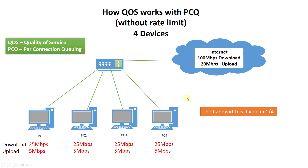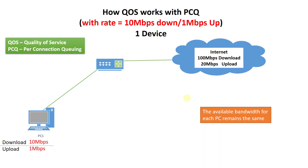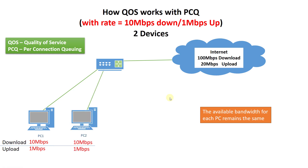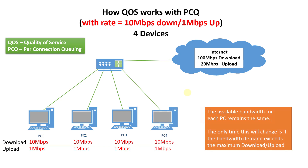Let us look at another scenario. In this scenario we have set a rate limit, and this rate limits the total download which for this scenario is just 10 megabits and also limits the total upload which is 1 megabit. With this limit, this PC will now only get 10 megabits down and 1 megabit up, and if a second PC comes online that PC will get the same bandwidth as the first PC, and a third and fourth will be the same. So when a rate is set the bandwidth remains constant to the device.